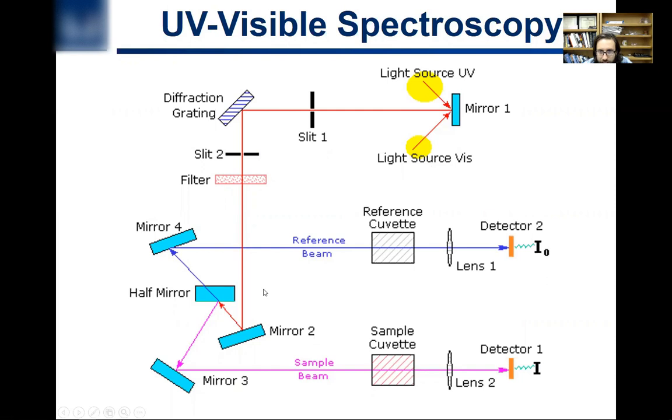I don't want you to get into the ray optics here, but basically you have a reference cuvette, a sample holder, and a sample cuvette, and then you're just detecting how much light comes out in both cases.